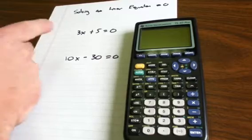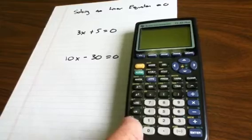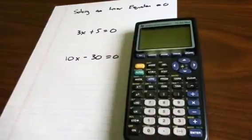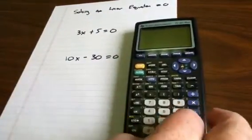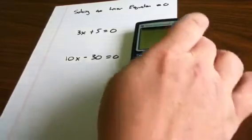Let's begin by finding the solutions to 3x + 5 = 0. I'll start by graphing 3x + 5, so I hit Y=, clear out anything that's old, put in 3x + 5, and hit Graph.